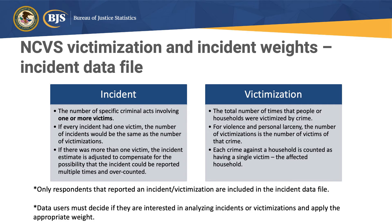Before getting into the differences between the incident and victimization weights, it's important to explain the difference between these two crime measures. An incident is the number of specific criminal acts involving one or more victims. A victimization is the total number of times that people or households were victimized by crime. If every incident had one victim, the number of incidents would equal the number of victimizations. However, not every crime incident has one victim. For example, if someone was walking down the street with a friend and they were robbed, that would be one robbery incident but two victimizations, because there were two victims. The incident weight is the victimization weight divided by the number of victims in the incident.